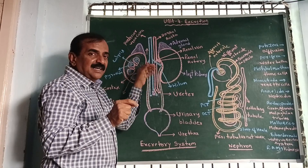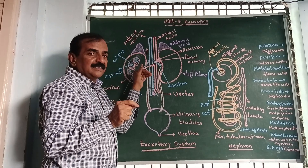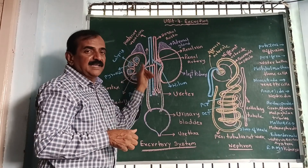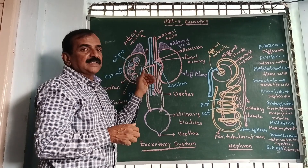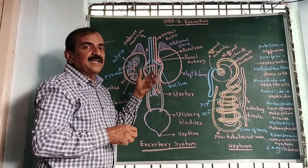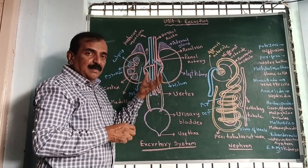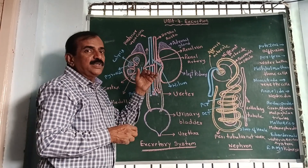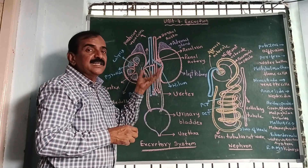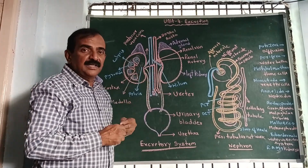These are attached in the region of the hilus of each kidney. That is a brief description about the blood vessels attached to the kidney. Thank you children.